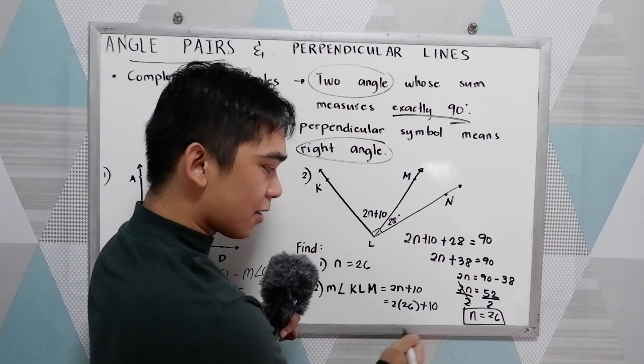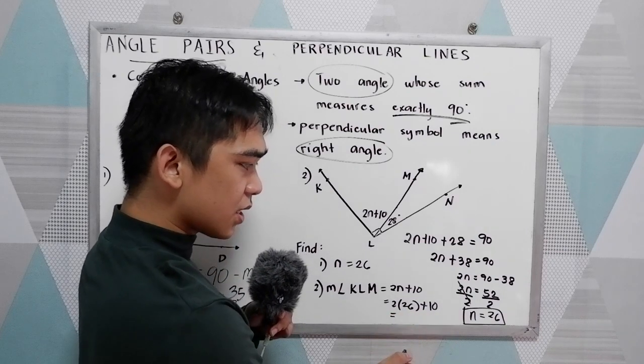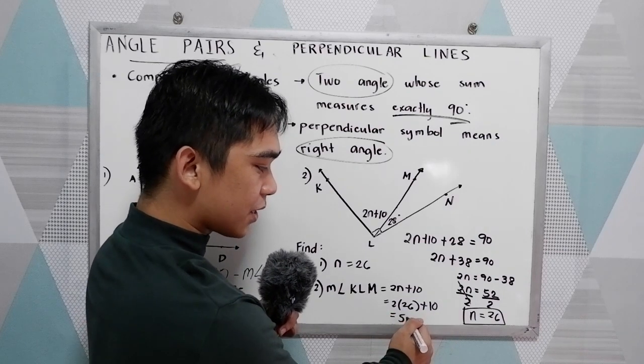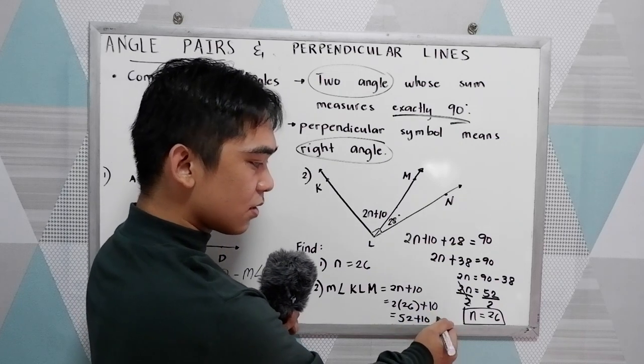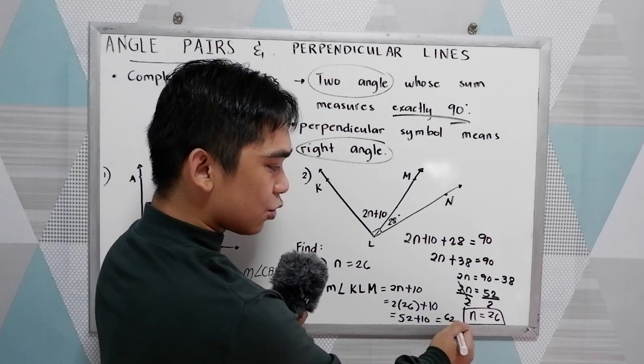2 times N is 26, plus 10. 2 times 26, that is 52. Don't forget, plus 10, so that is 62 degrees.